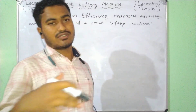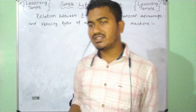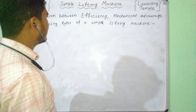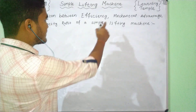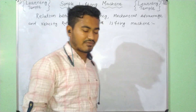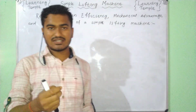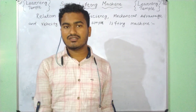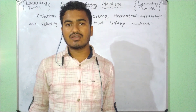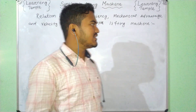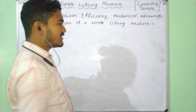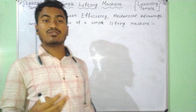So, which relation? The mechanical advantage is the ratio of the load lifted to the effort applied. Similarly, the velocity ratio is the ratio of the distance moved by the effort to the distance moved by the load.